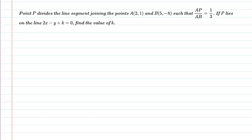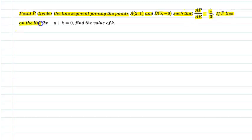Hello students, let us understand the following question. Point P divides the line segment joining the points A(2, 1) and B(5, -8) such that AP upon AB is equal to 1 upon 3. If P lies on the line 2x minus y plus k equal to 0, find the value of k.